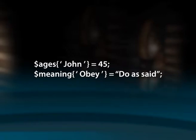A hash lookup and an array element can be differentiated by the braces they use. Arrays use square brackets while hashes use curly braces. Assigning a value to a key is a simple statement like $ages{John} = 45 and $meaning{obey} = 'do as said'. John and obey are keys and the values are assigned on the right side of the equal sign. Initializing a hash with key-value pairs is similar to initializing arrays.